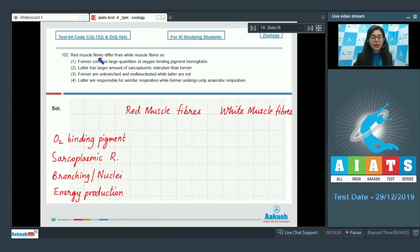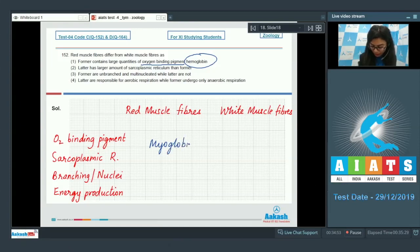Question number 152: Red muscle fibers differ from white muscle fibers as - former contains large quantities of oxygen binding pigment hemoglobin, latter has larger amount of sarcoplasmic reticulum than former, former are unbranched and multinucleated while latter are not, or latter are responsible for aerobic respiration while former undergo anaerobic respiration. Let's go over them one by one. Option one is mentioning oxygen binding pigment as hemoglobin. We know the oxygen binding pigment in muscle fibers is myoglobin and it's only present in red muscle fibers and absent in white muscle fibers.